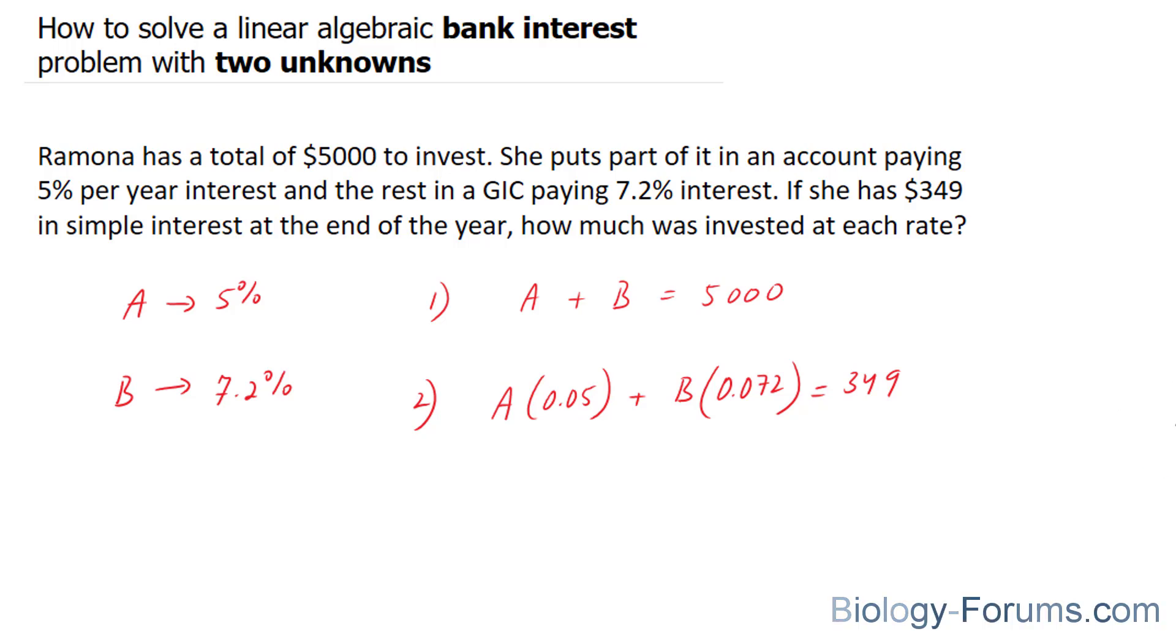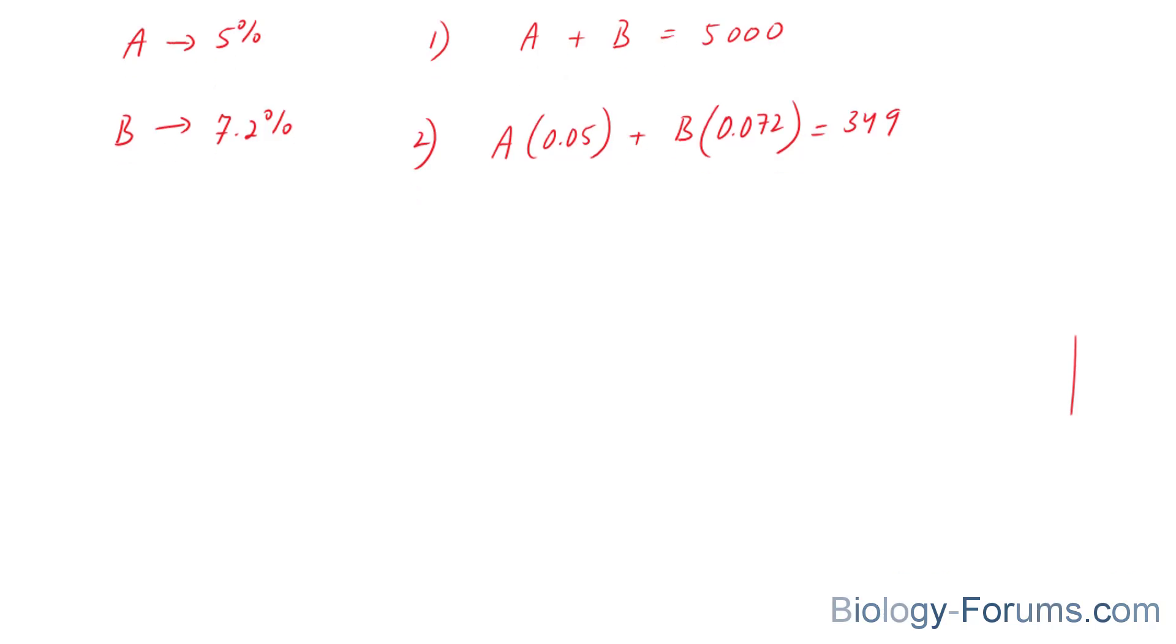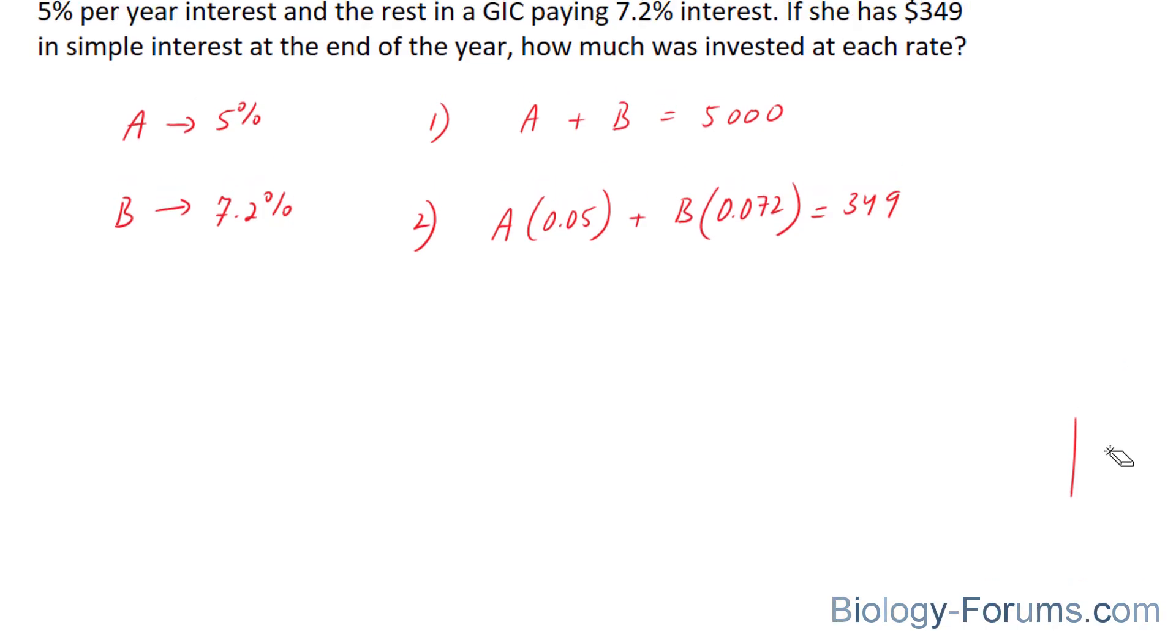That being said, we now have a linear system with two unknowns. There are several ways you can answer this, and the two ways that I have shown in previous videos is the addition-subtraction method or the substitution method. Each of those will work in a situation like this.